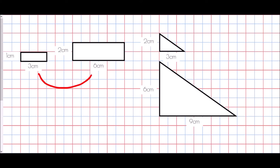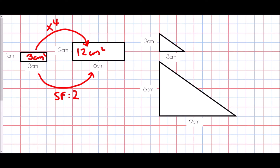What is the scale factor to take us from a length of 3 to a length of 6? Well, that is a scale factor of 2 — it's all doubled, and it's the same for the height, 1 to 2. If I look at the area though, the area of this shape would be 1 times 3, so the area would be 3 centimetres squared. The area of the second shape would be 2 times 6, which is 12 centimetres squared. What has the area been multiplied by? Well, the area has multiplied by 4.